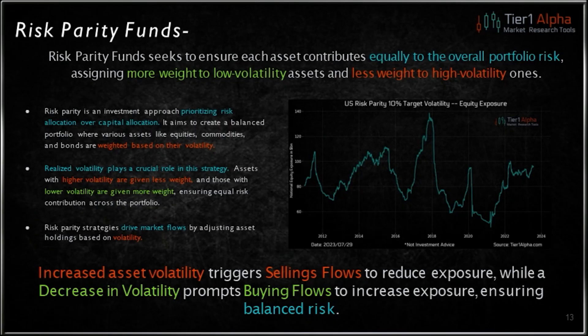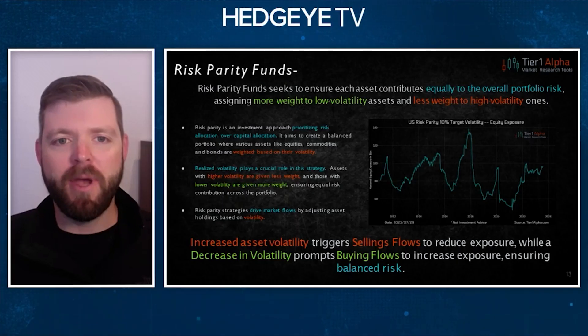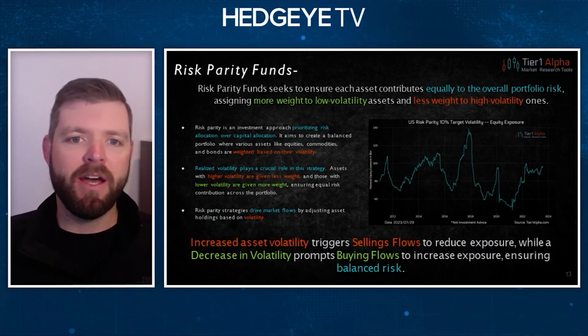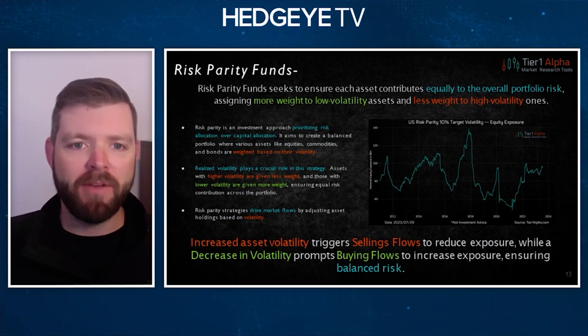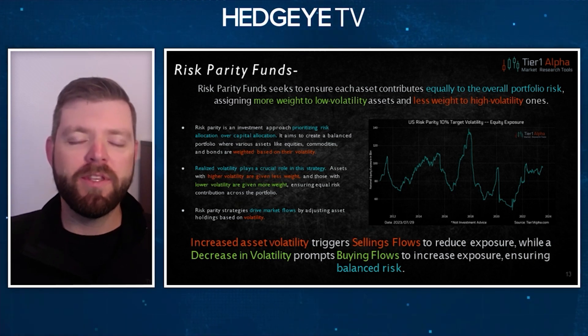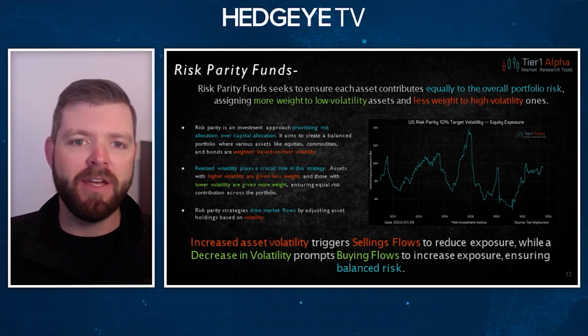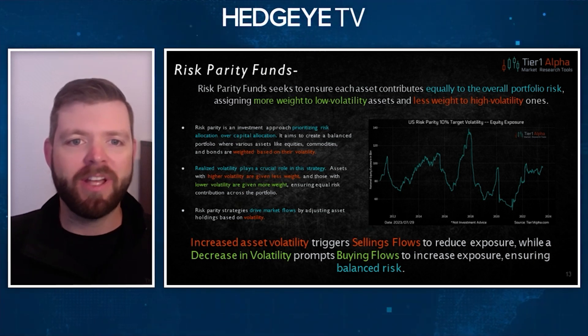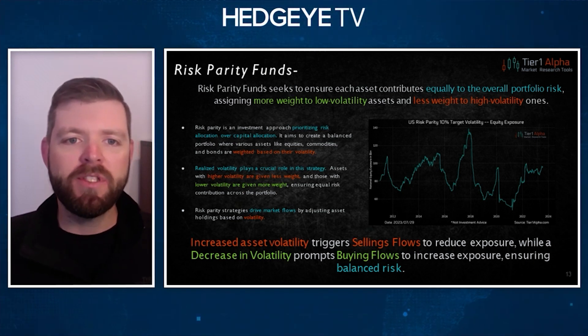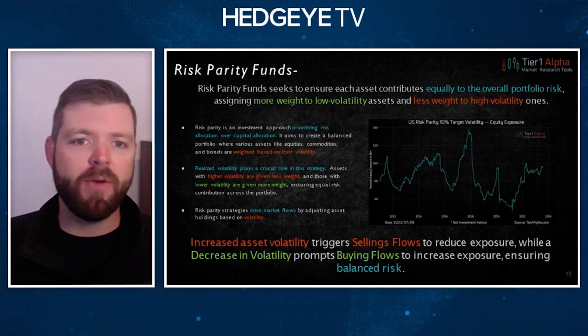Risk parity funds — when you think of risk parity, you can think of things like Bridgewater and their all-weather portfolio made famous by Ray Dalio. Basically, what this means is asset allocation is decided based on the volatility of the asset, rather than some predetermined ratio like a 60-40 portfolio. So this ties in with realized volatility the same way as the other funds do.